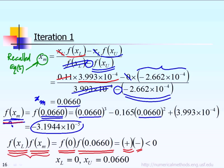XM is a negative value. And according to my explanation before, when this is true, I mean when FXL times FXM is less than 0, it simply means the new lower bound is the same as before, which remains 0. But the new upper bound now is different. The new upper bound now will have the value of XM, which is 0.066.